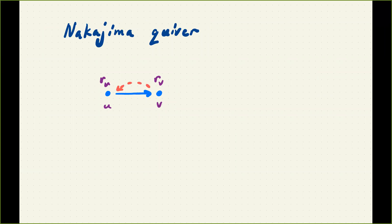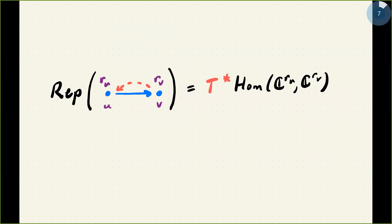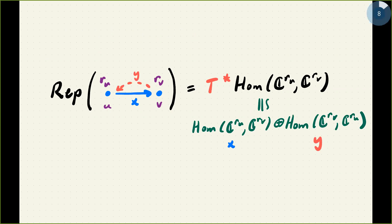I'm doing algebraic geometry over the complex numbers, and this is essentially ordinary quivers, but I'm interested in the Nakajima approach, so for every arrow we're going to double it with an arrow going in the reverse direction. I interpret the representation space as the cotangent space to the original Hom space, and you can think of this as having two components x and y—the original label and y labeling the backwards direction, thought of as a cotangent vector at x.